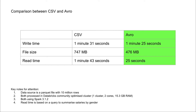From the results: write time — CSV takes 1 minute 31 seconds to write 10 million rows, whereas Avro is about 6 seconds quicker at 1 minute 25 seconds. For file size, there's a huge difference — CSV is 747 MB whereas Avro is 476 MB, which is much less and better from a storage point of view. For read time, summarizing salaries by gender took 1 minute 43 seconds with CSV in Databricks Community Edition, whereas Avro only took 25 seconds.